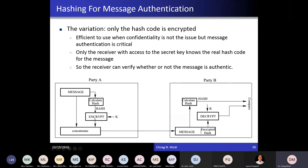The encrypted hash value and message are concatenated and reach the receiver. The receiver calculates the hash from the received message. If the message is modified, the calculated hash will differ from the decrypted hash value. If the encrypted hash value is modified, it also will not match. If both message and encrypted hash value are modified, it will still not be accepted. This provides message authentication but not confidentiality.